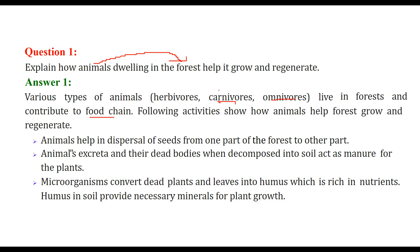Animals facilitate seed dispersal — reproduction in plants. They are one important factor in dispersal of seeds from one part of the forest to another. The excreta of animals and their decomposed remains act as manure for upcoming plants. The humus created by dead plants and animals, when microorganisms or decomposers work on it, is rich in nutrients and is an important mineral source for plants.